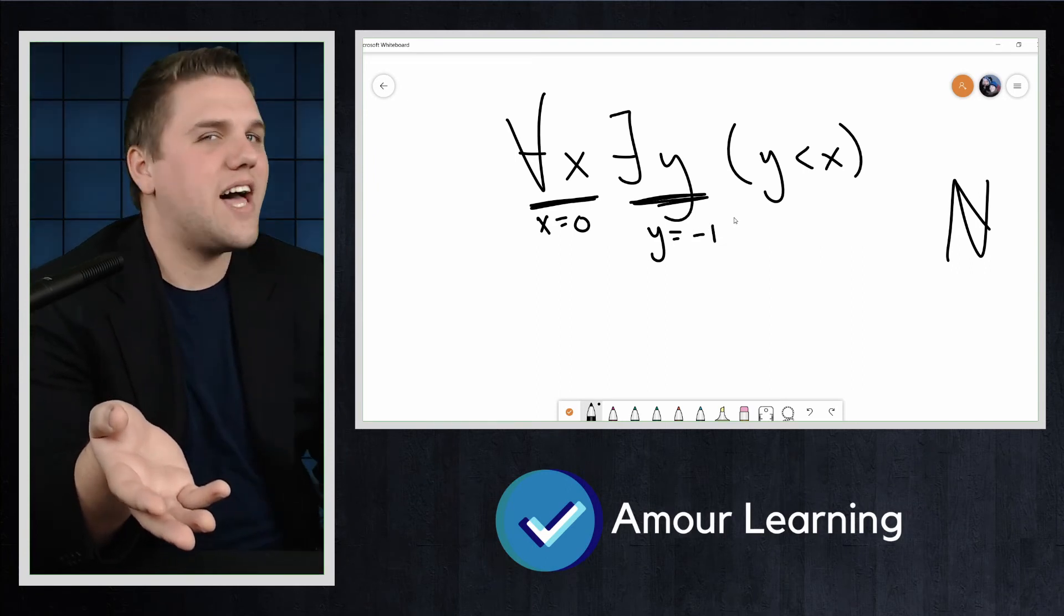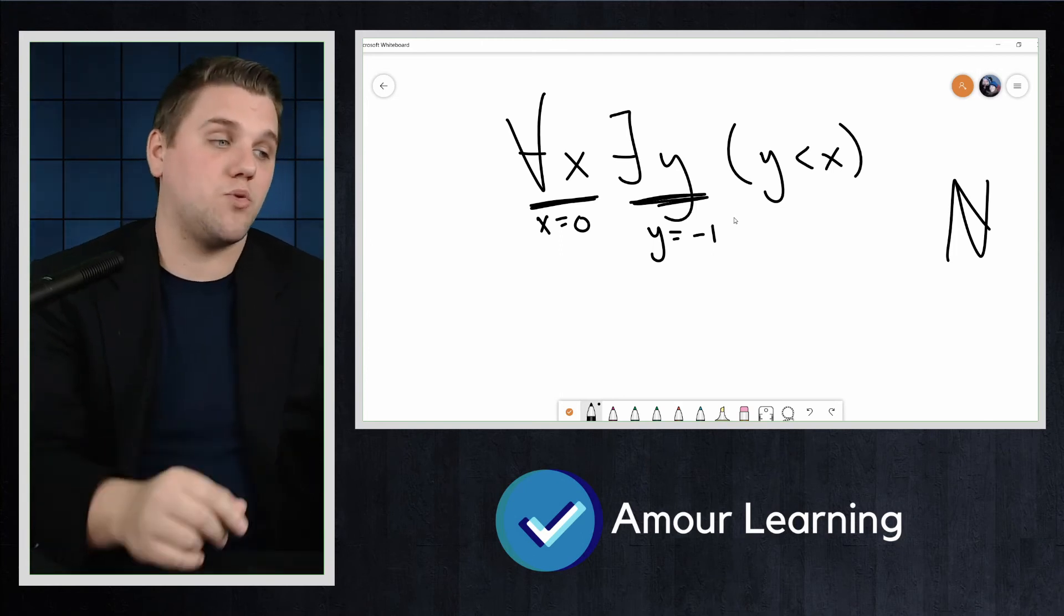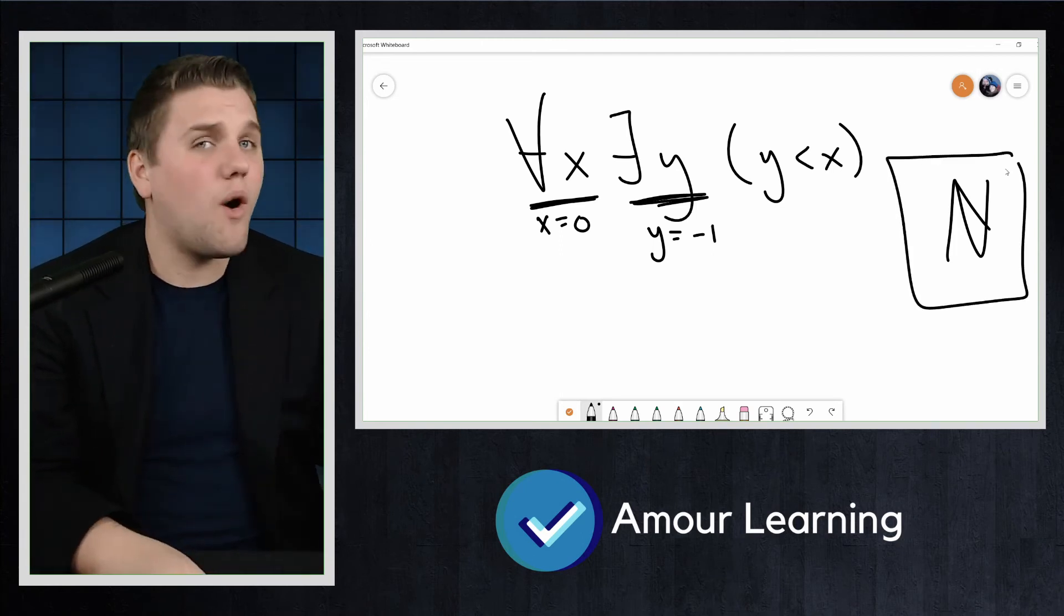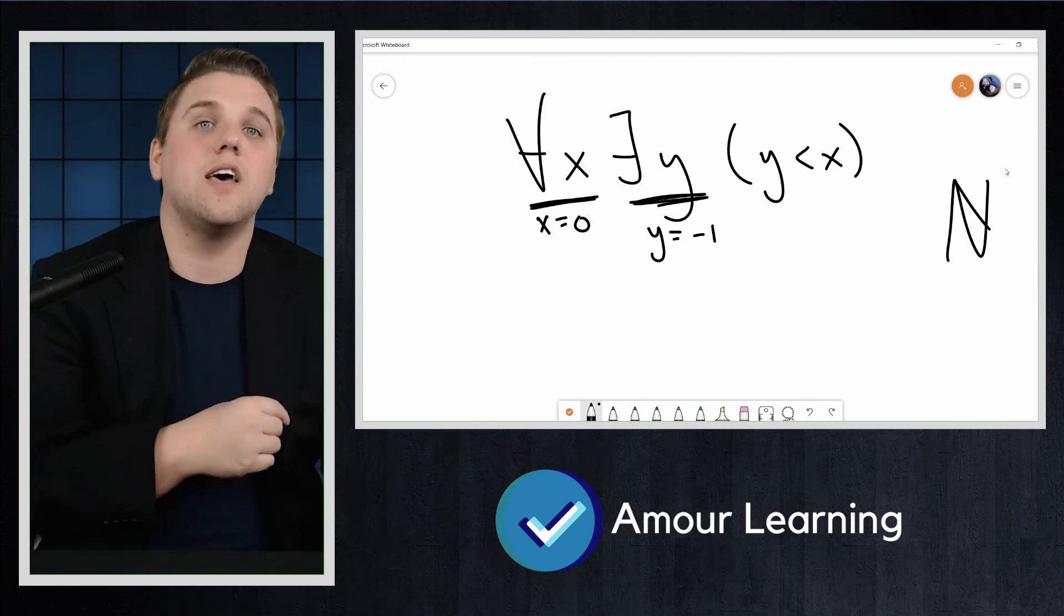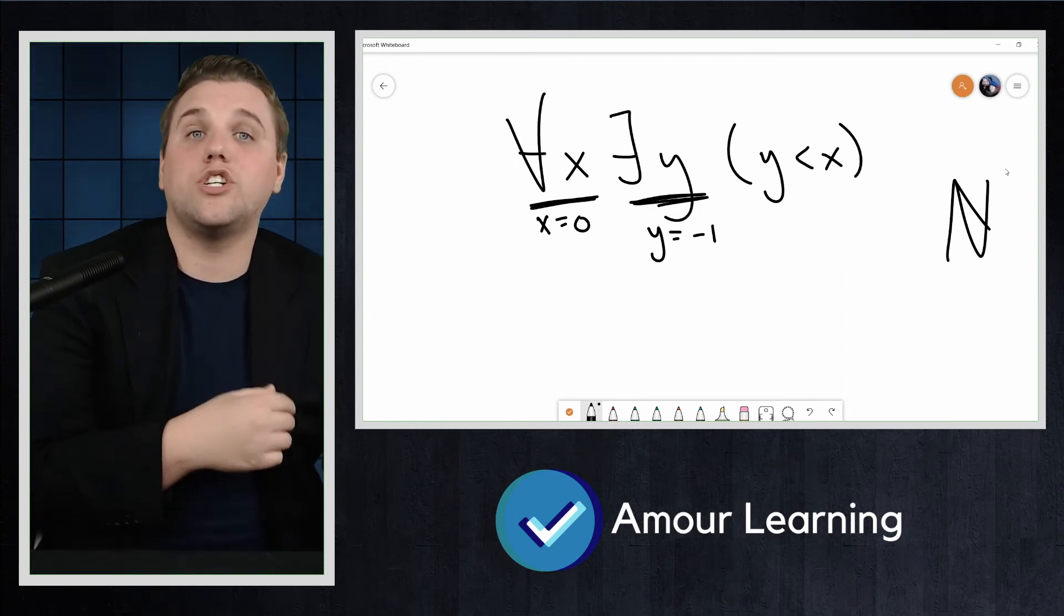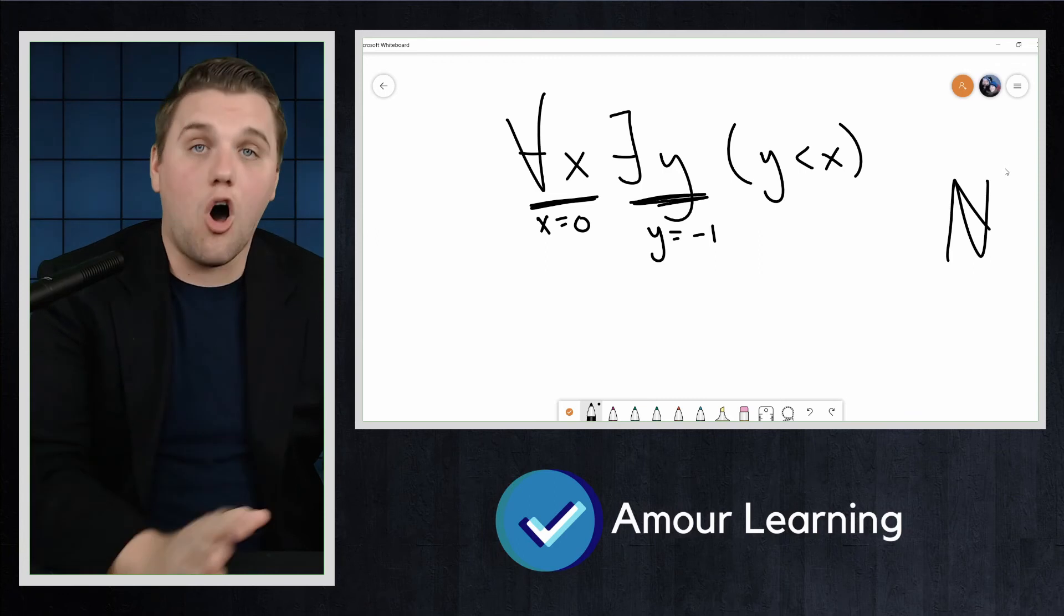Well, that's not a number. Remember, in our domain of discourse, which is N here, negative 1 is not a number. Thus, we see that the statement is false because there is a number which is less than or equal to all other numbers.